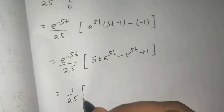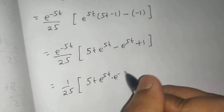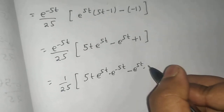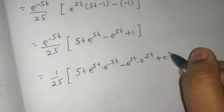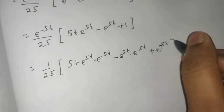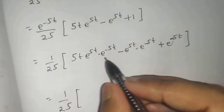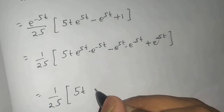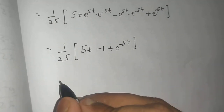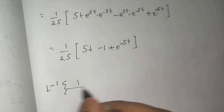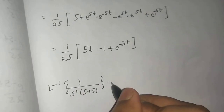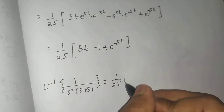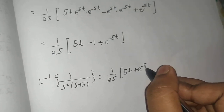Distributing e^(-5t)/25 inside: 5t·e^(5t)·e^(-5t) gives 5t (since e^0 = 1); e^(5t)·e^(-5t) gives 1, so that term is -1; and e^(-5t)·1 remains e^(-5t). So the final answer is: the Laplace inverse of 1 upon s²(s+5) equals (1/25)(5t - 1 + e^(-5t)).